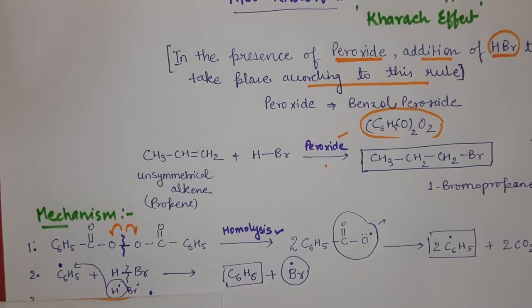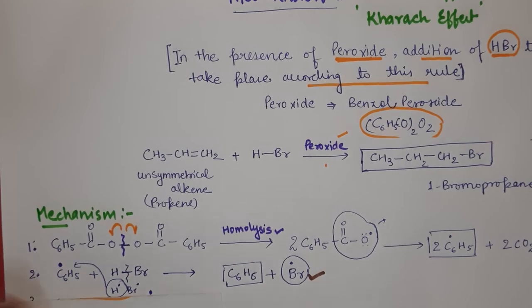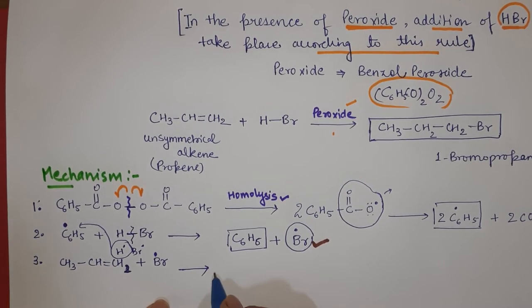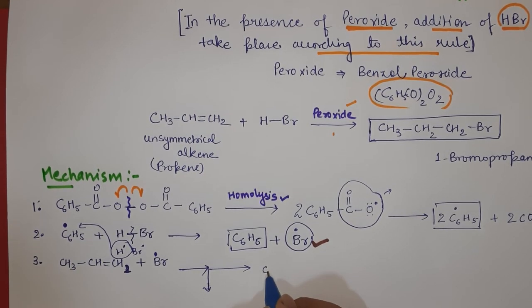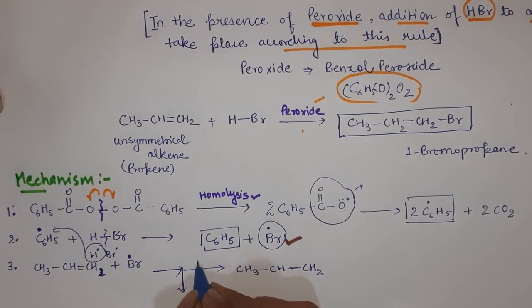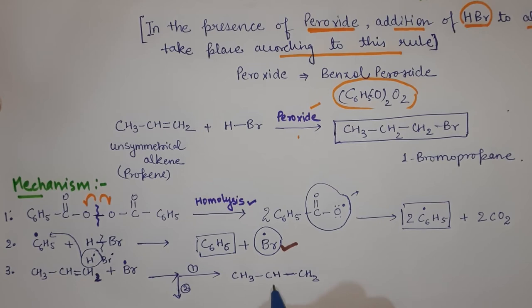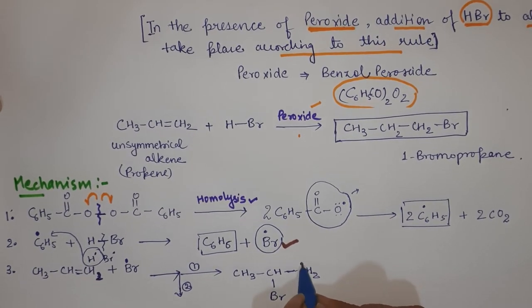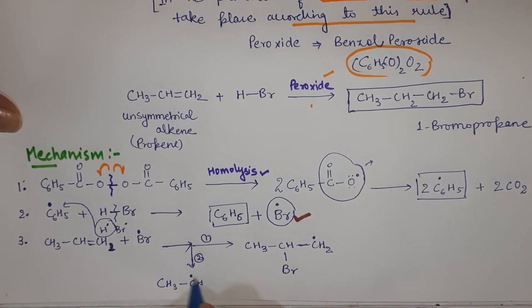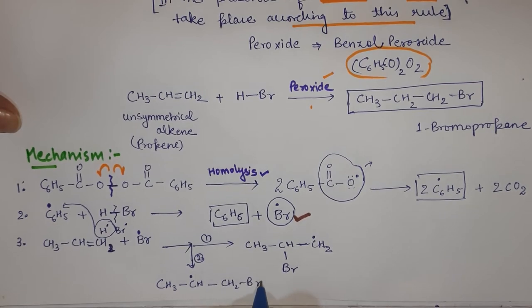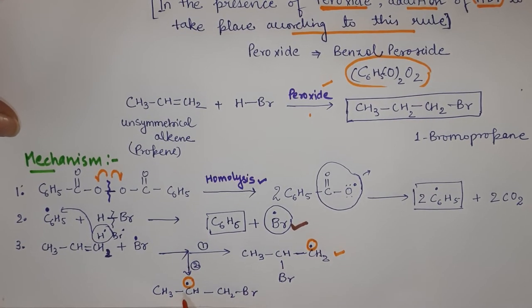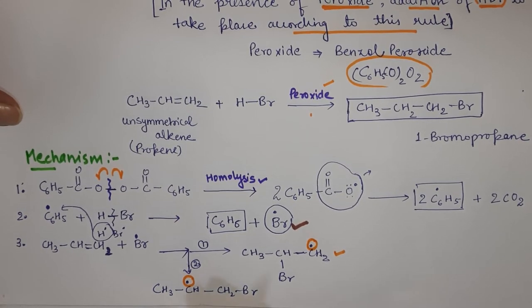Now this Br radical which is formed will react with the alkene. When this bromide radical reacts with alkene, it forms two different intermediates: Case 1 is CH3-CH•-CH2-Br and Case 2. In Case 1, if Br is adding to the second carbon, the radical is possessed here. And if Br is attaching to the first carbon, radical gets possessed on the second carbon. These are two possibilities: either radical persists on the first carbon or the second carbon.